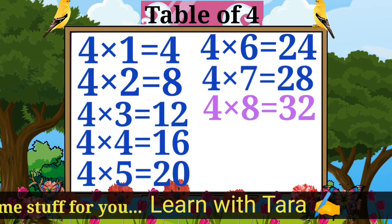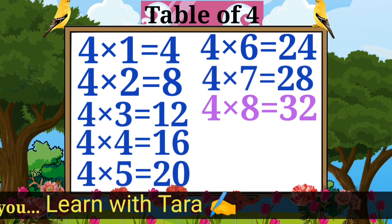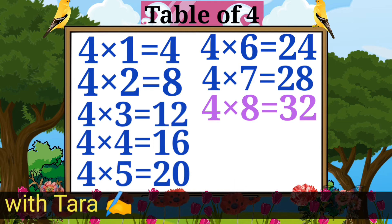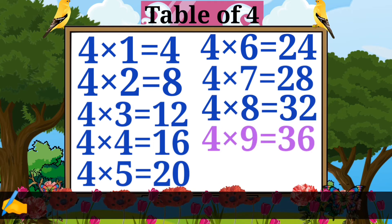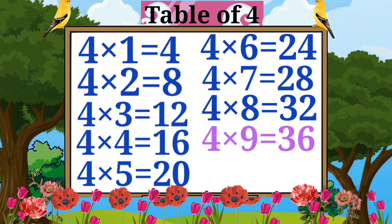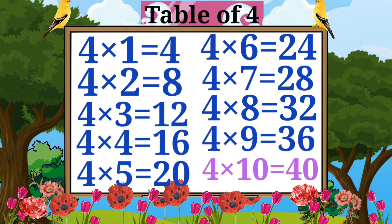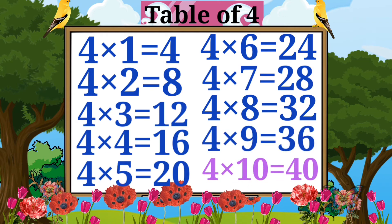Four eights are thirty-two. Four nines are thirty-six. Four tens are forty.